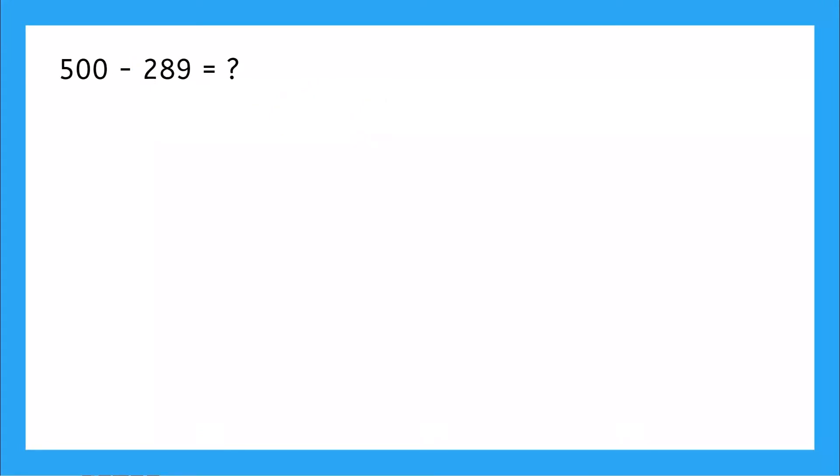Okay, next problem is 500 minus 289. So we'll write it vertically lining up our place values. So we have 500 minus 289. Okay.